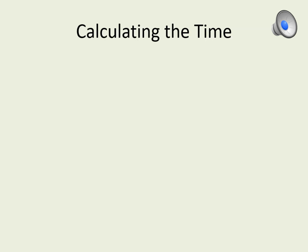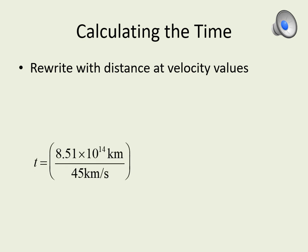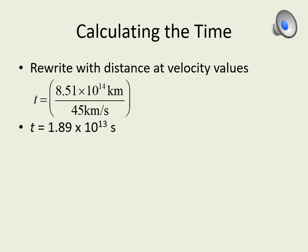Now we can actually calculate the time it takes for the spacecraft to travel. The first step is to rewrite the equation, this time putting in the values for the distance and the velocity. Then we simply do what the equation tells us to do: divide the distance by the velocity and get the time in seconds. Remember to be careful to put the exponents into your calculator the right way — use the EE key or EXP key and don't put in extra times tens. In this case the time came out to 1.89 times 10 to the 13 seconds.